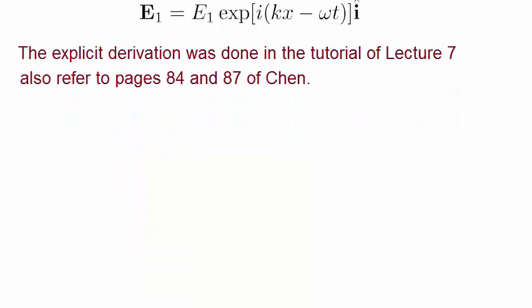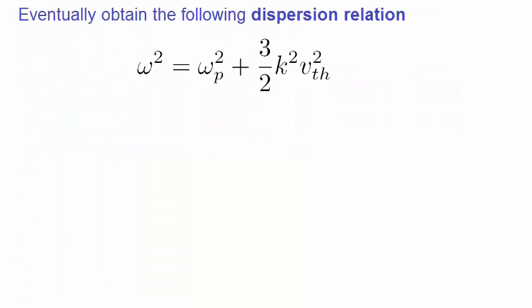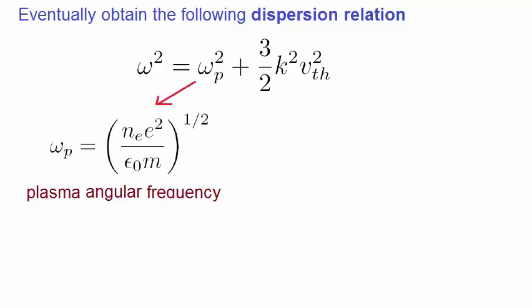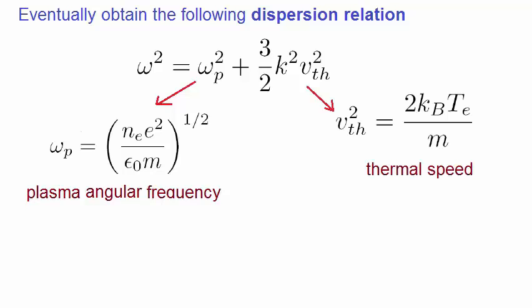We finally obtained the relationship we were after for the angular frequency Omega. This is known as a dispersion relation. Where Omega P is the plasma angular frequency, and V is the thermal speed given by this expression.